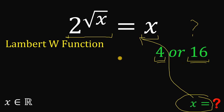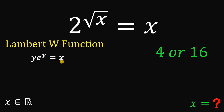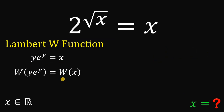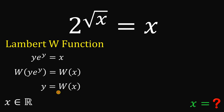The Lambert W function: if we have the equation y multiplied by e raised to the power of y equals x, and we take the Lambert W function on both sides, we get that y — the exponent of e — must be equal to W(x), where W is the Lambert W function.